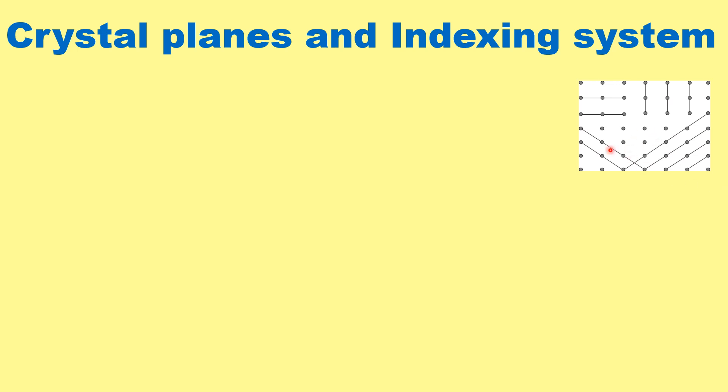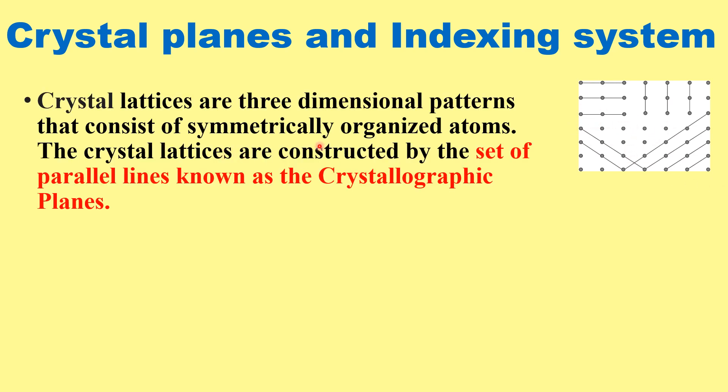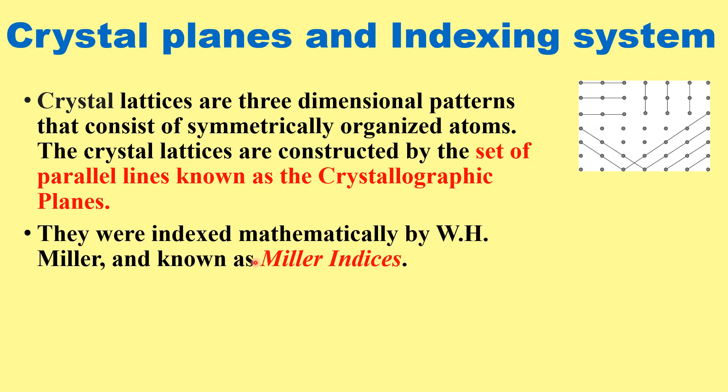As we know, crystals are periodic arrangements of atoms. In three dimensions they make symmetrical patterns. The crystal lattices are constructed by the set of parallel lines known as the crystallographic planes, and they were indexed mathematically by W.H. Miller and known as the Miller indices.